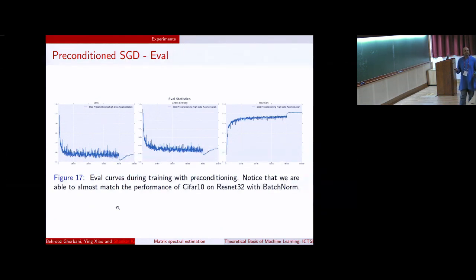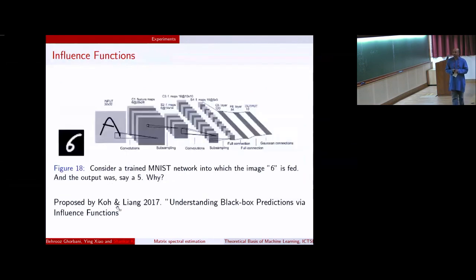This suggests that there might be something to doing preconditioning. The other thing is, this is of course just training. How does it perform with eval? And what we see is that this achieves like 91.5 percent on CIFAR-10 with ResNet-32, but the state of the art is 92.5. So we are about one percent less than what batch norm gets to, but we are in the ballpark.